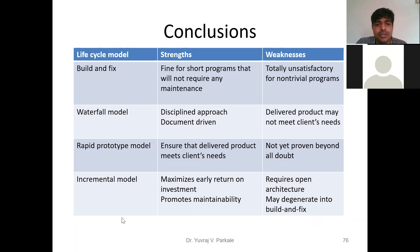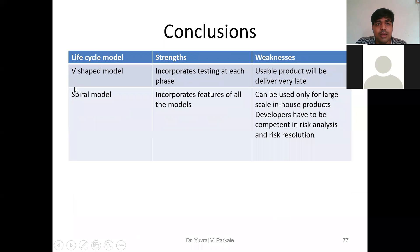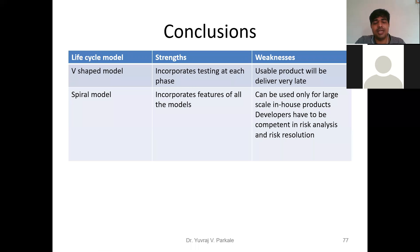The fifth model is the V-shaped model. In this model, we incorporate testing at each phase — at every phase we test our objectives. The weakness of the V-shaped model is that the usable product will be delivered very late, because testing at each phase can double the overall completion time from one year to two years.